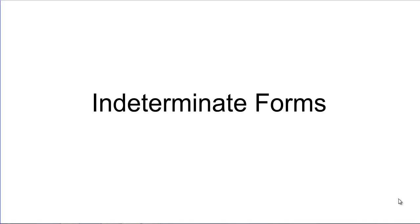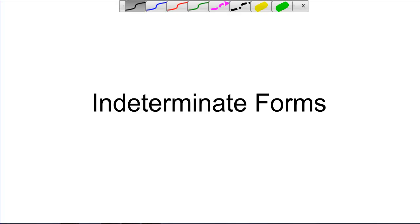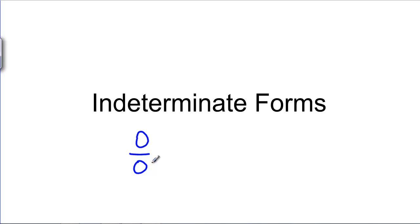Now we're going to talk about indeterminate forms. This has come up earlier when we were talking about taking limits of things like 0 over 0 or infinity over infinity. Up until this point, we have used algebra to try to take something out of an indeterminate form and into something we can actually work with. For 0 over 0, you might factor and cancel something, or multiply by a conjugate. For infinity over infinity, you almost always multiplied through by 1 over x to a power.